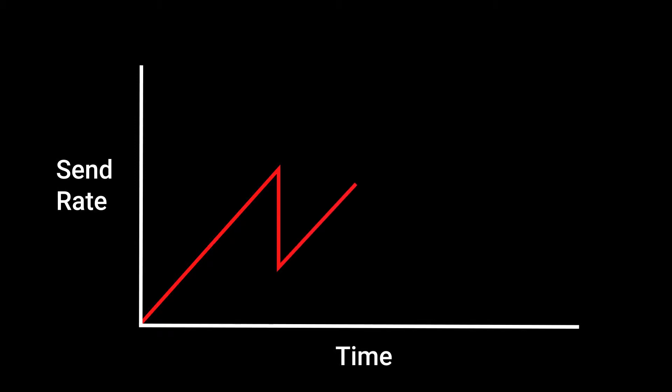Eventually the queue gets so long, or the packets have been sitting there for so long, that there's no choice but for your network to discard some of these packets — we call this packet loss. At this point, TCP recognizes that the network is clogged and drastically reduces the amount of data it's sending. Once the traffic jam is cleared and the packets have passed through, the process essentially starts all over again, and the rate at which data is sent is slowly increased.